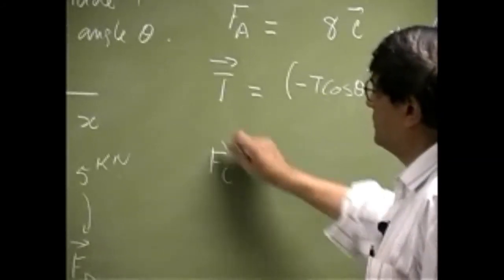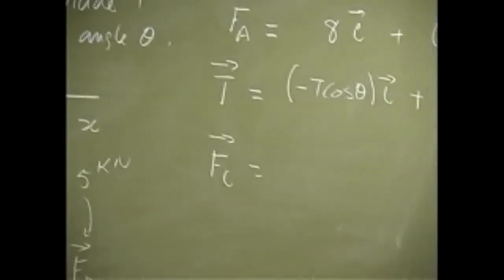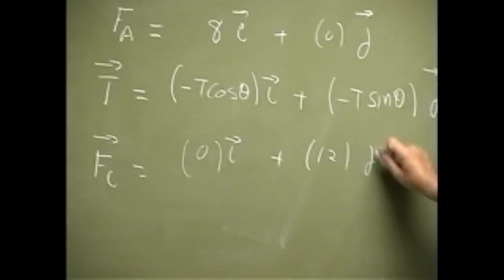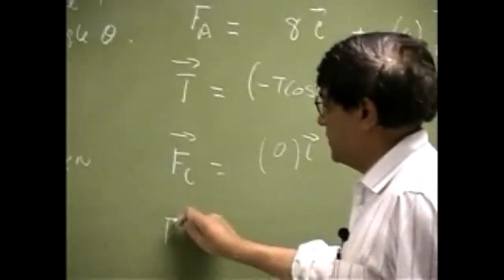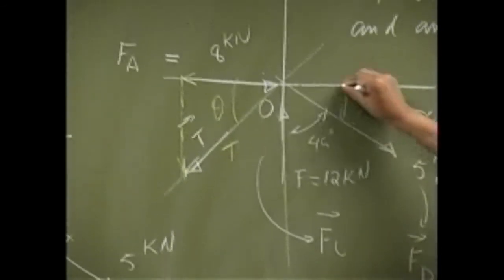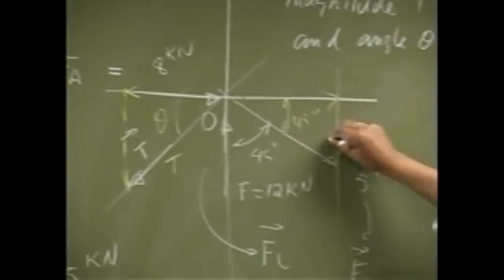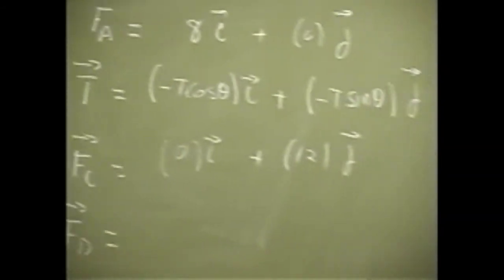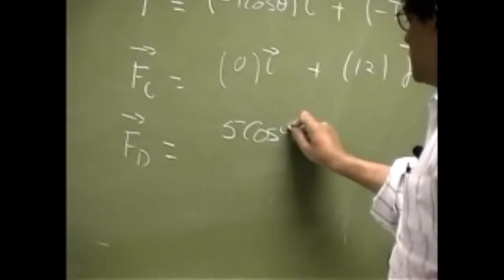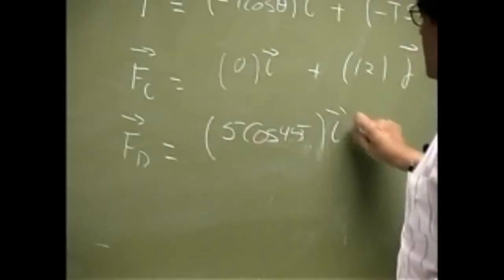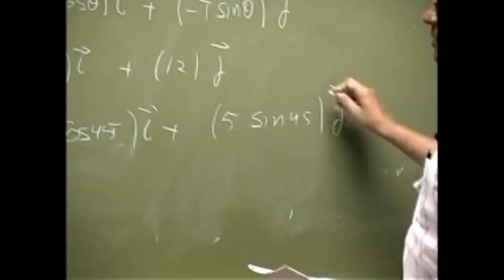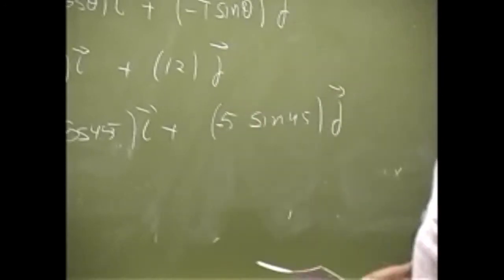Then we have F_C. This one here has 0 component for X going up. So this one is 12 times J. Then we got the last one which is F_D. And this angle is 45. This angle will be same as 45. So drop a perpendicular, that's your X component and that's your Y component. So we get the X component as 5 cosine 45 times I. And then you have 5 sine 45 times J. Except it's going in the negative Y, you place negative sign.